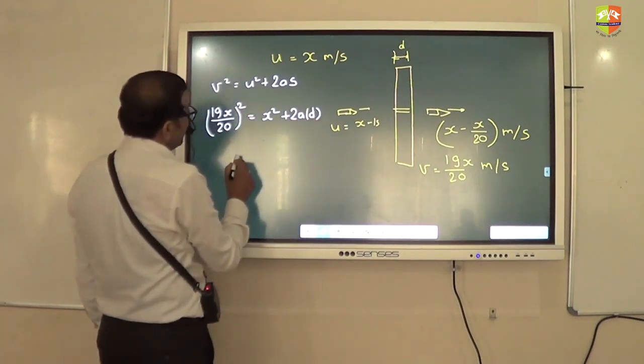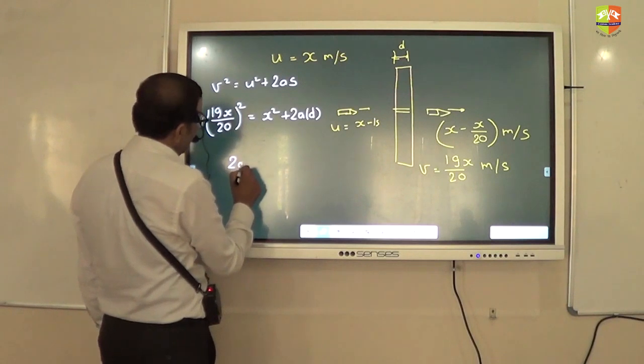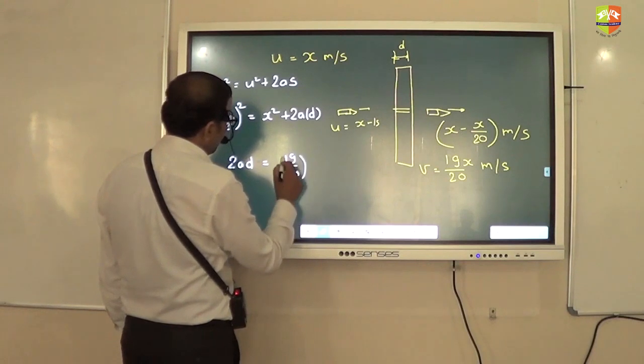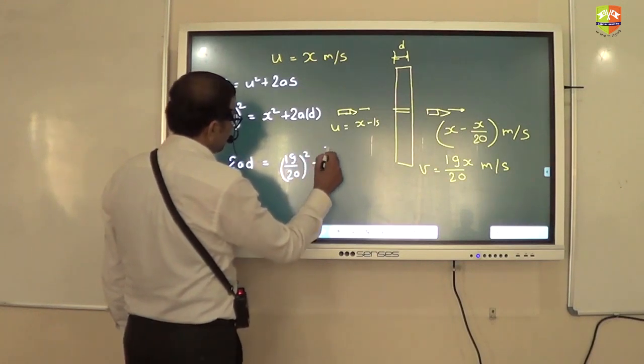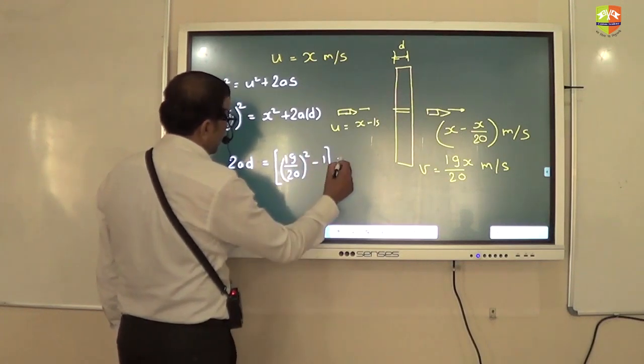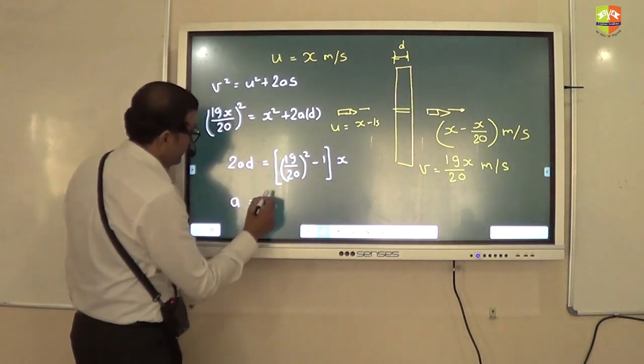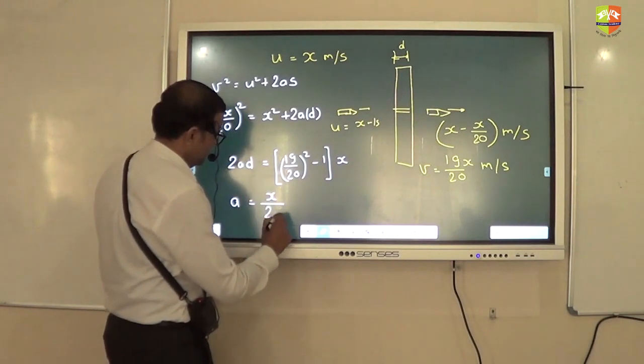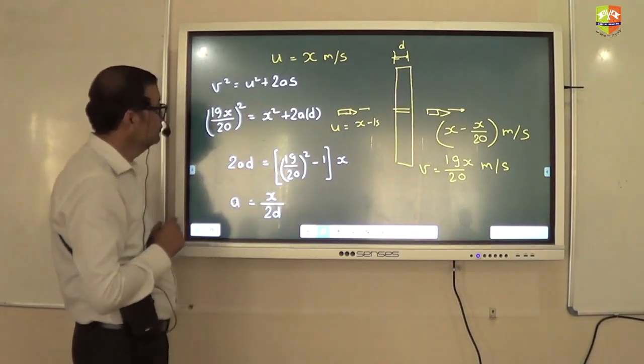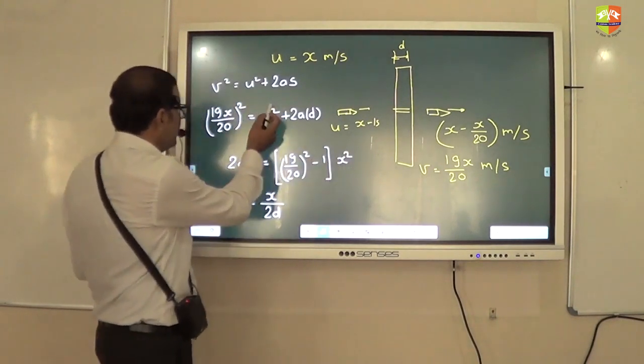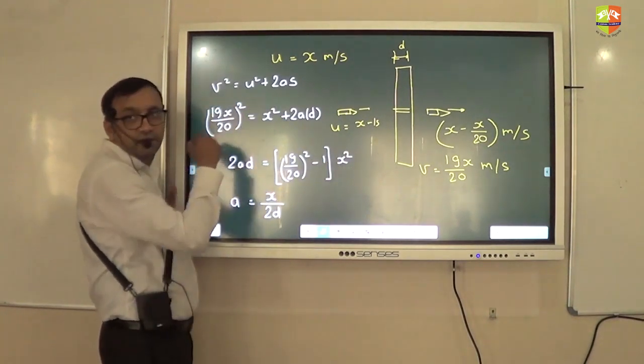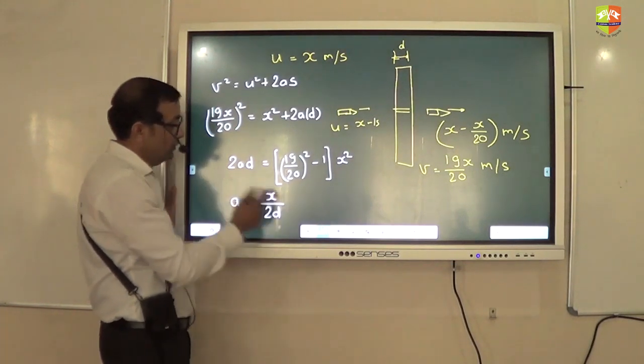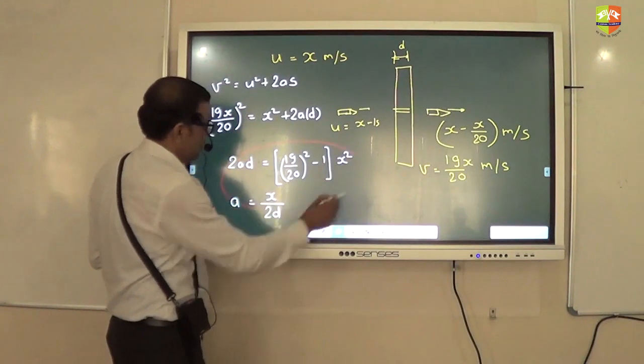So I will get 2a into d will be equal to 19 by 20 whole square minus 1 times x. So a is x square, sorry. It goes this side, right? Okay? Yes, sir. So 4 minus 1x, right? So I think... Okay, let me... So you do x square also.